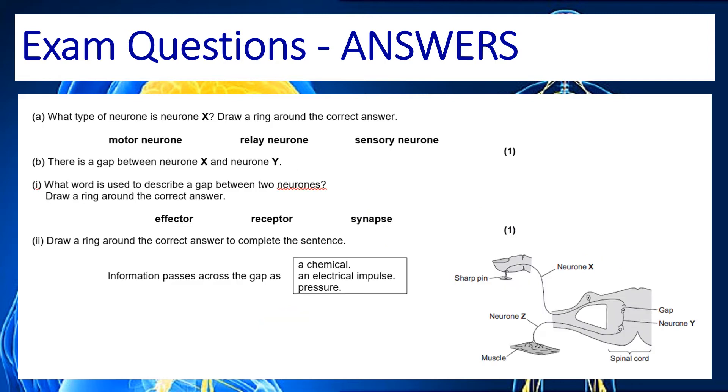Okay, so we're looking at neuron X to start with and we've already mentioned that that is going to be a sensory neuron. We're then looking at this gap over here and don't forget the word we use for gap is synapse. It was in the spelling test. The information passes across that gap as an electrical impulse.